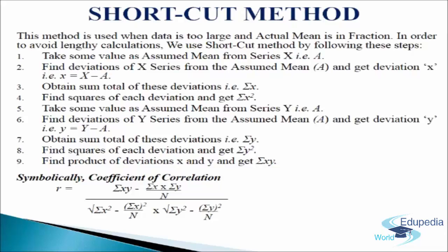First, we take some value as the assumed mean from series x, that is 'a'. Then we find deviations of x series from the assumed mean a and get deviation x, that is x equals to x minus a. Then we obtain the sum total of these deviations, sigma x. Next we find the square of each deviation and get sigma x square.